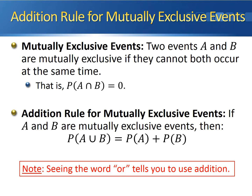Seeing the word 'or' in any probability problem tells you that you're likely going to use addition. Before, whenever we saw the word 'and,' that told us we were going to use multiplication. The word 'or' is a giveaway that you're going to use addition.